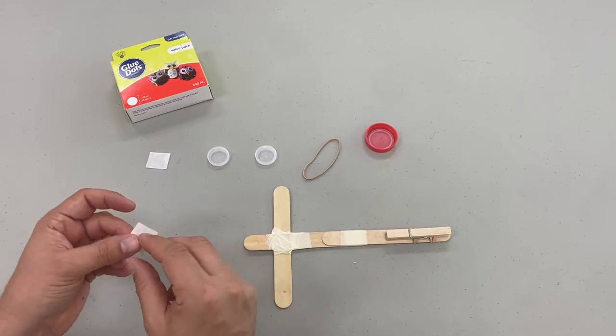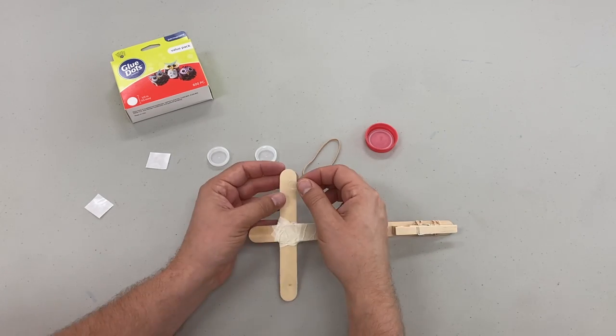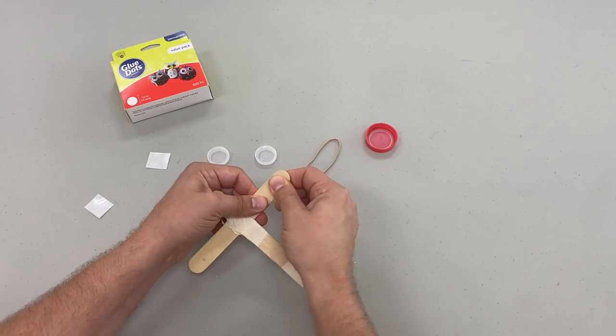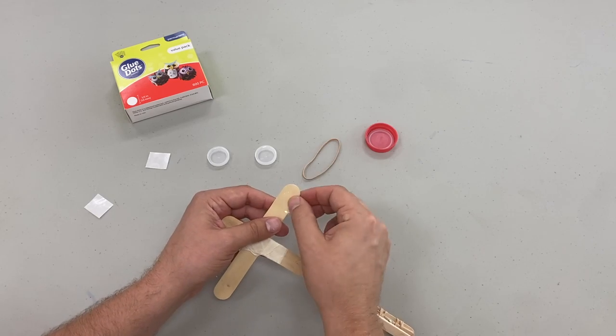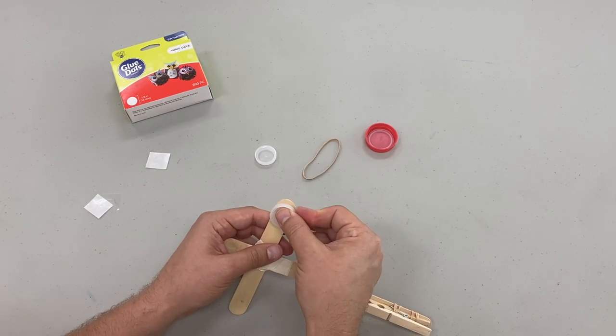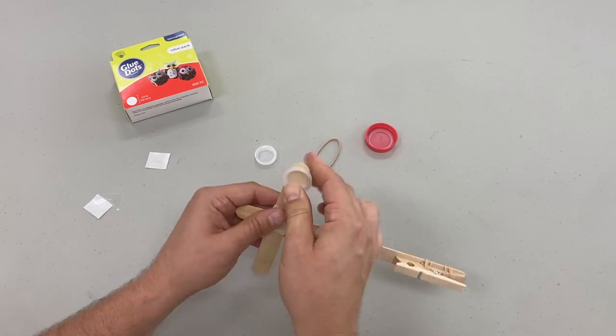Now we're going to use our glue dots. We're going to put one on each side of that T-brace that we just made and attach a water bottle lid to them. That's what's going to hold our elastic bands on and really give us that crossbow shape.